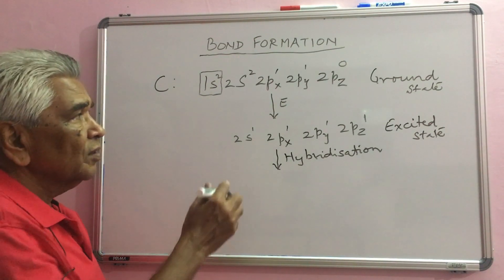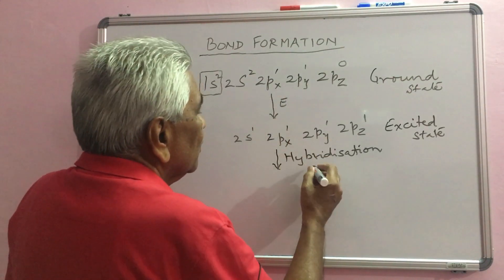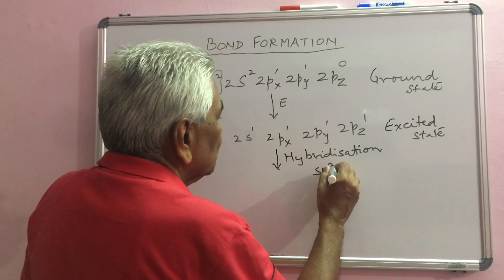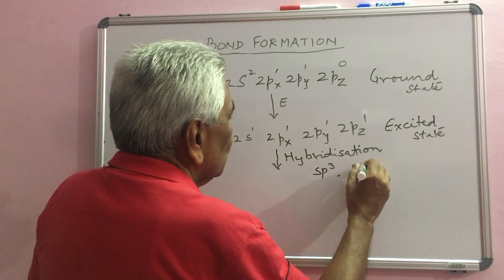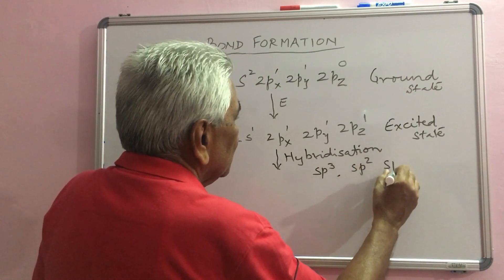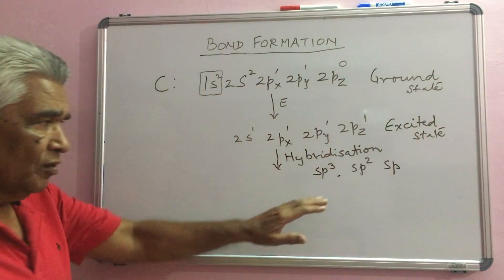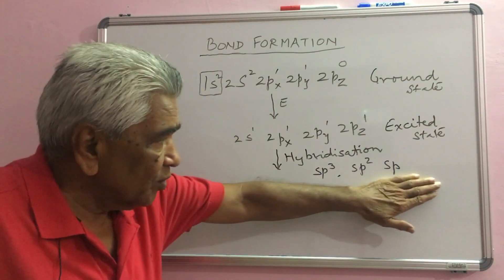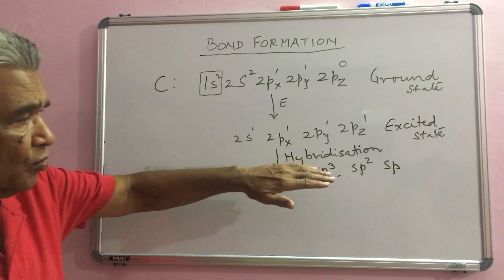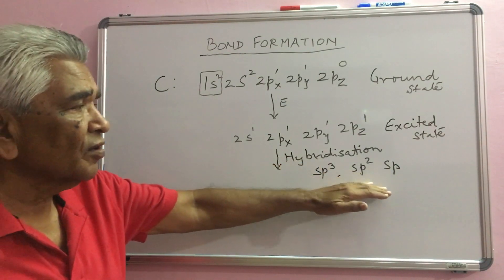Hybridization that carbon undergoes is of 3 types: SP3, SP2 and SP. One you can write, but SP1 is not written. So, first you have to see when it undergoes SP3 hybridization or SP2 or SP.